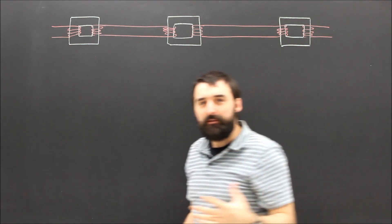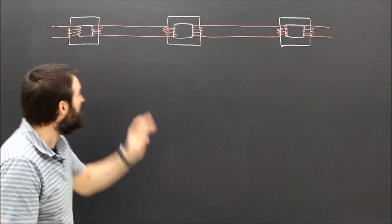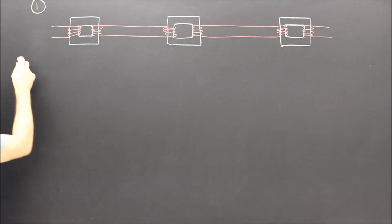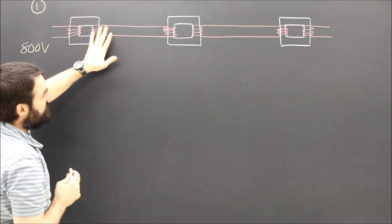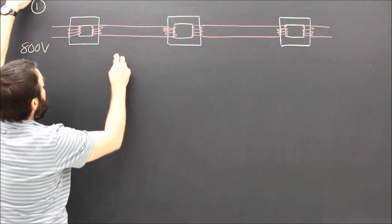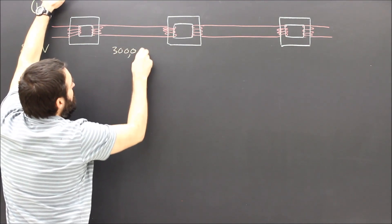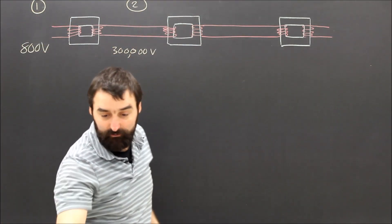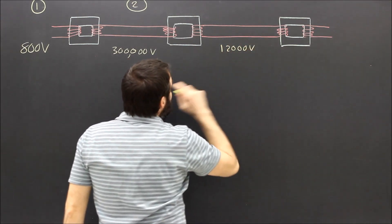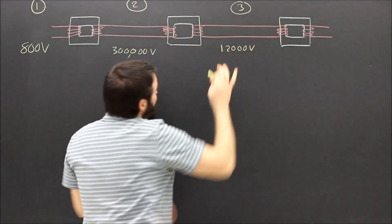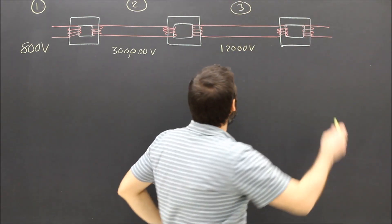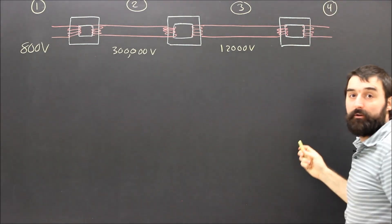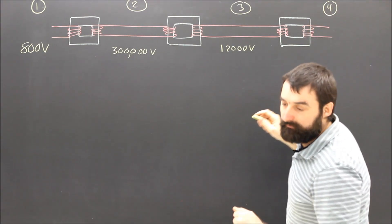I've drawn the transformers, and if you read the question you understand that there are sort of four parts to the question, but only three transformers. At first the power is generated at 800 volts. Then there was a transformer which changed that voltage up to 300,000 volts — that's stage two, transmission. Then there was another transformer that stepped it down to 12,000 volts — that's step three, between the stations. And then in the neighborhood there's a fourth step with a voltage of 1,300 volts.